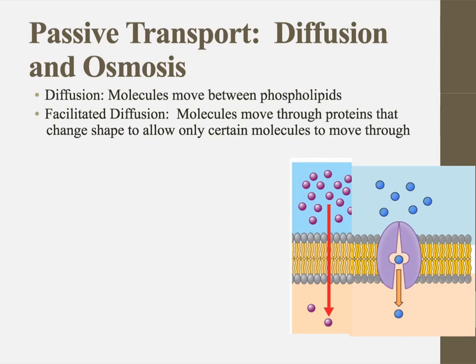Here's the difference between them. In simple diffusion, particles move between the layers of the phospholipids. In facilitated diffusion, those particles are still moving from high concentration to low concentration, but they're going through carrier proteins. It does not require energy — it just requires a protein because whatever these molecules are, they are either polar or ionic. They don't work with the hydrophobic tails, or they're just too big.